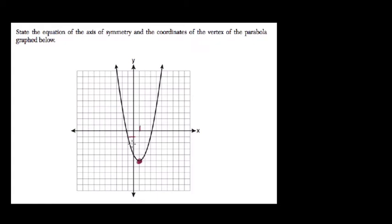1, and then negative 1, negative 2, negative 3, negative 4, negative 5. So 1, negative 5. That's our vertex.